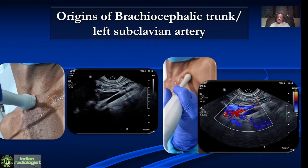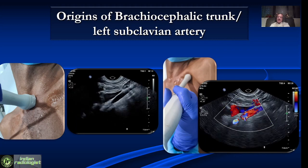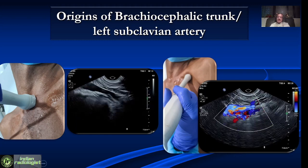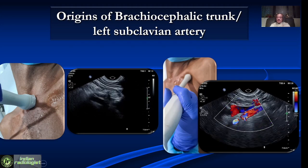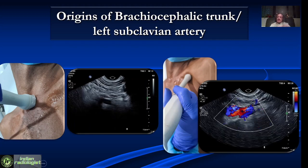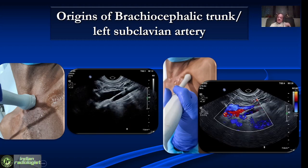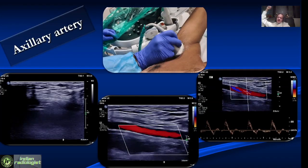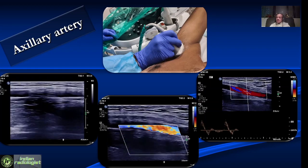One of the most important problems in the subclavian artery is looking at its origins — the origin of the left subclavian artery and the origin of the brachiocephalic trunk — because they are hidden by the bones. So typically we either use a cardiac probe which has a very small footprint, or a phased array probe, and try to look at the origins. This is important because very often stenosis is at the origin. For the axillary artery, we evaluate by hyperextending the arm, but we should not apply too much pressure as the vein can get compressed.